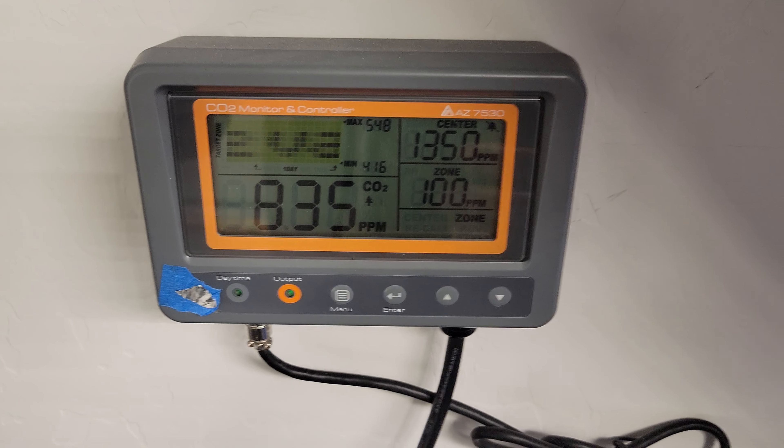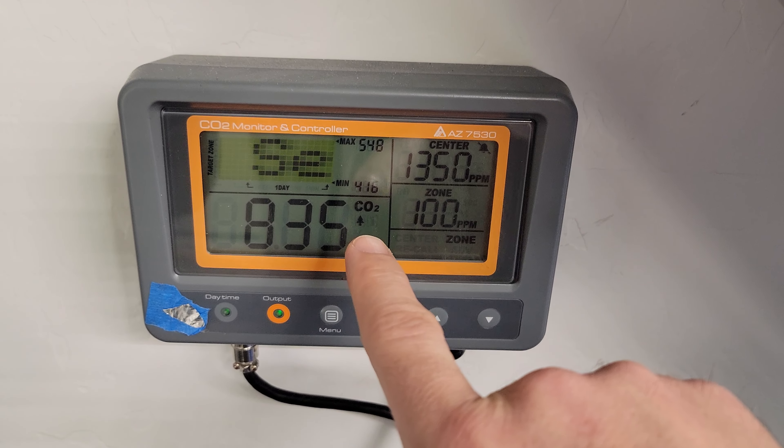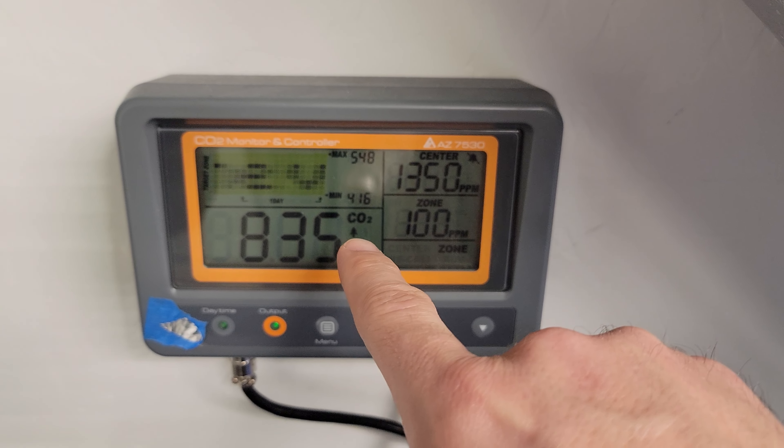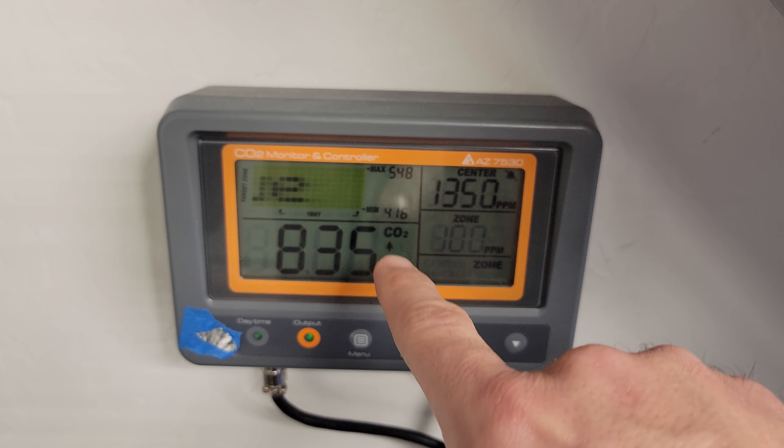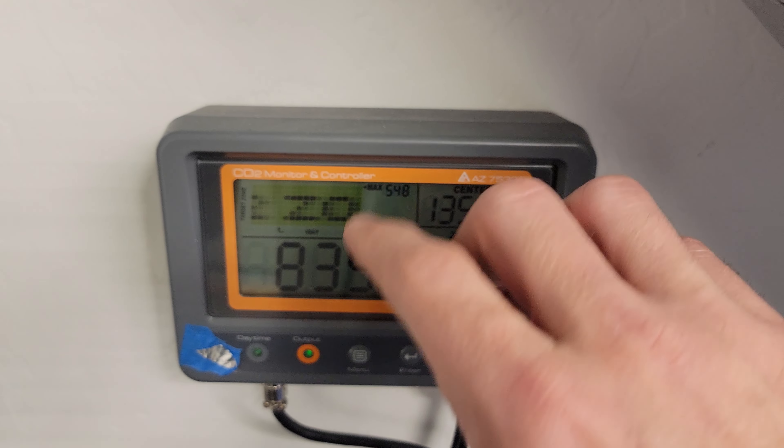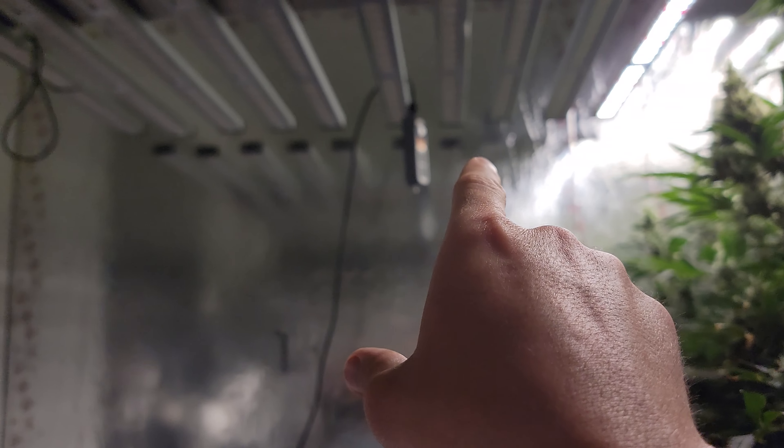They're pretty easy to set up. That little tree picture right there and there's a human picture over there—those are the two settings you can choose. This says greenhouse or plant setting, and that's the one that uses the photoreceptor I talked about. It lets it turn on when that photoreceptor is getting light, because your plants only use CO2 when lights are on.